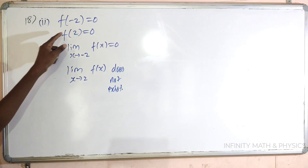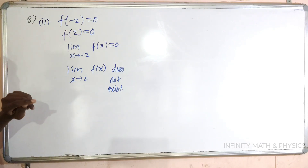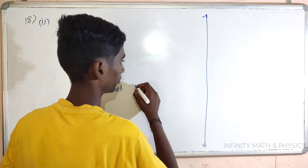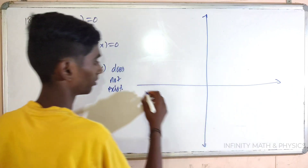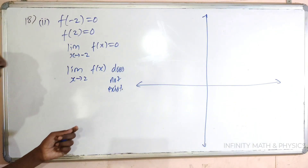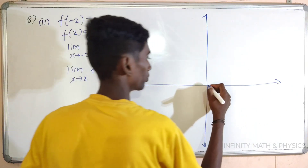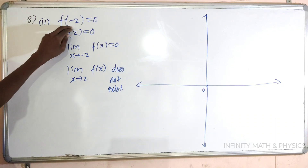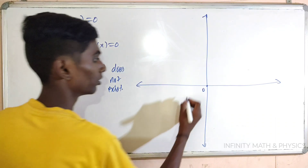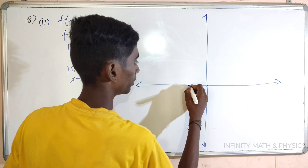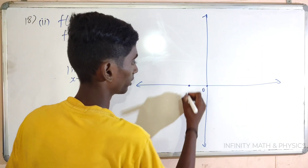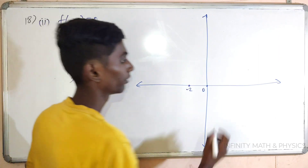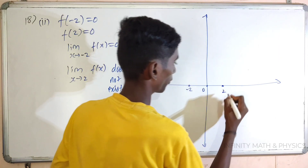I have the second subdivision. f of minus 2 equal to 0, f of 2 equal to 0. Let's take a graph on the x-axis. f of minus 2 is 0 — in the point, defined. f of 2 equal to 0 — in the point, defined.